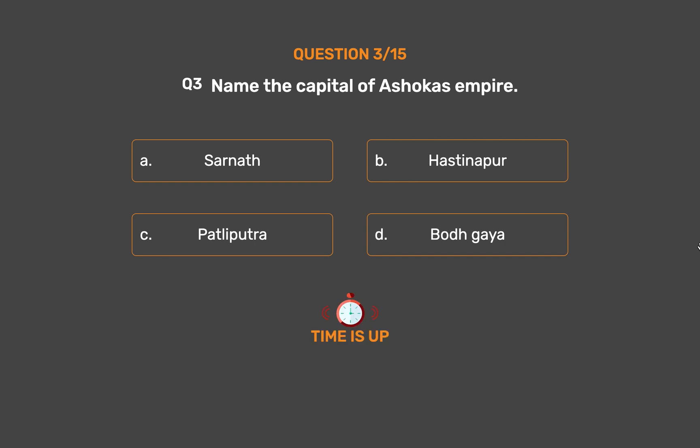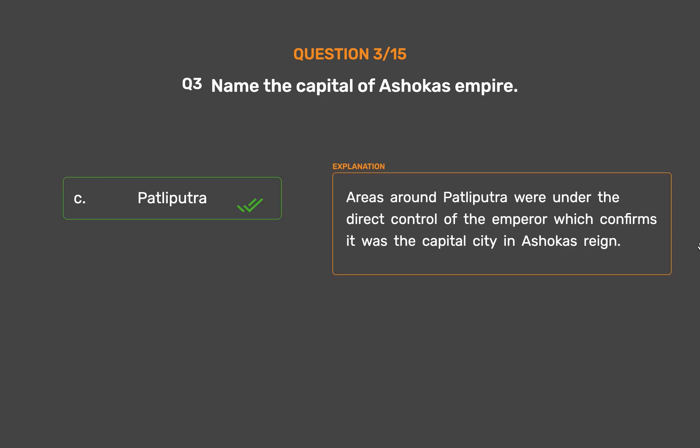The correct answer is Option C: Pataliputra. Areas around Pataliputra were under the direct control of the emperor, which confirms it was the capital city in Ashoka's reign.